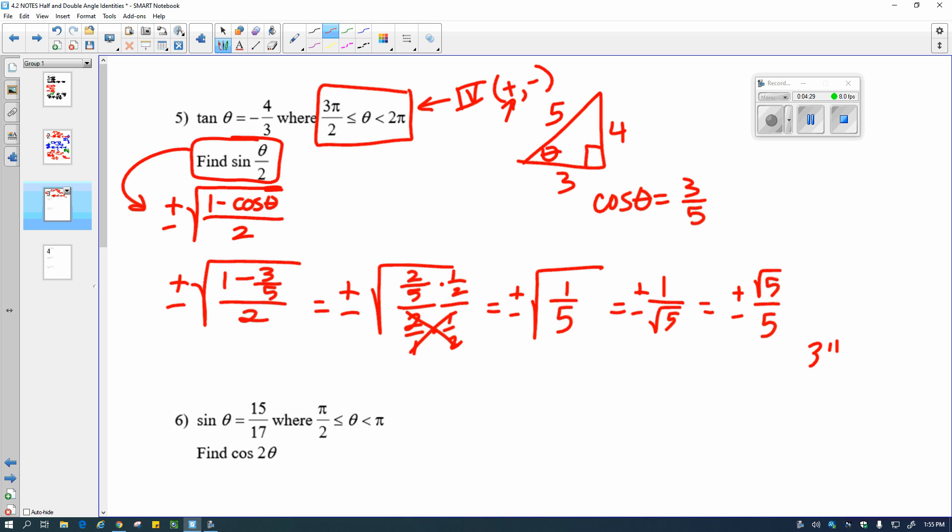So I'll take that 3π over 2, less than or equal to theta, less than 2π, and I'll cut everything in half. That gives me 3π over 4 is less than or equal to theta over 2, which is less than or equal to π. And that looks like that is in the second quadrant, and second quadrant is negative, positive. I was trying to find the sine that came from here. Find the sine. The sine is positive in the second quadrant, and therefore, I only care about the positive answer. My answer is square root of 5 over 5.